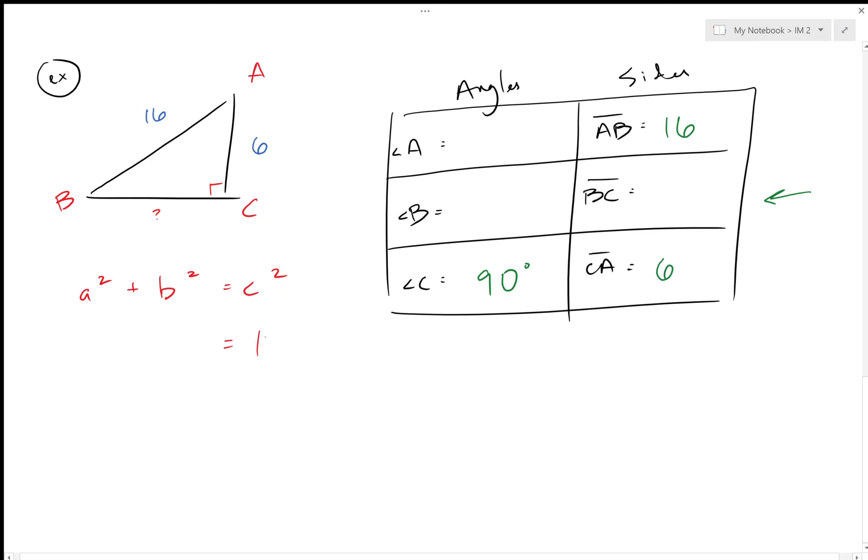C is the most important side, that's the hypotenuse. In this case, 16—we'll call 6 A, and B really doesn't matter, that's what we're trying to find. 6 squared is 36, B squared is B squared, and then 16 squared, so 16 times 16 gives me 256.